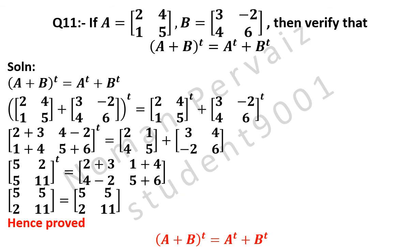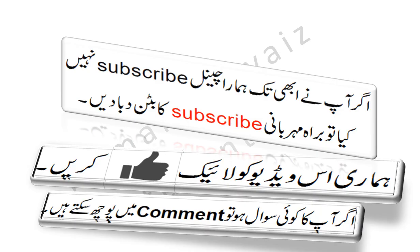Since both sides are equal, (A + B) whole transpose is equal to A transpose plus B transpose. Hence this is our answer. Please like this video and subscribe to our channel.